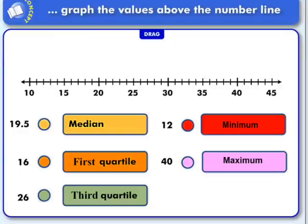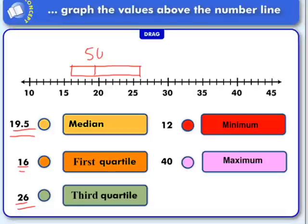Let's start forming our box and whisker graph. So our median was 19.5 miles per gallon, so I'm going to make a mark here at 19.5. Our first quartile was 16 and our third quartile was at 26, so I'm going to go ahead and make my box. Now the box represents the middle 50% of the data.